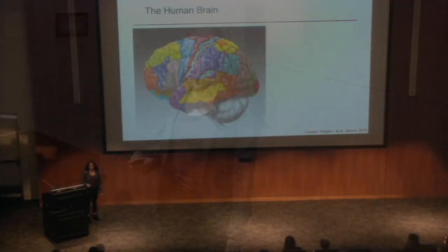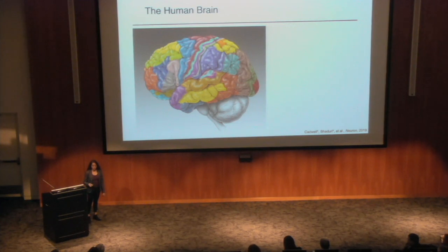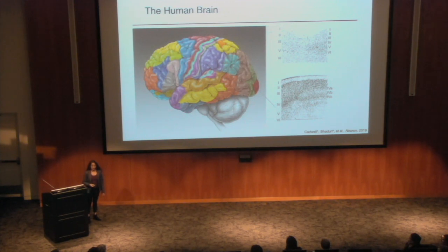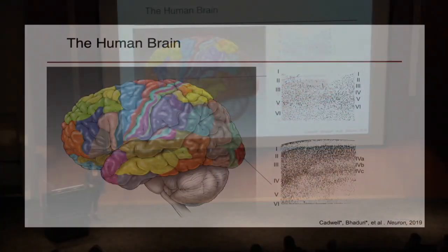As everyone here is well aware, the adult human brain is a very complicated structure organized into many parts with many cell types. Understanding the way that these structures are independently made as well as how they work together is really important to understanding human normal development, normal function, and disease. The outermost layer of the human brain, the cortex, is important for many aspects of perception and judgment and is organized into different structures across the cortical span. It has been recently shown that these differences in structure also correspond to many differences in cell type composition and cell type identity.